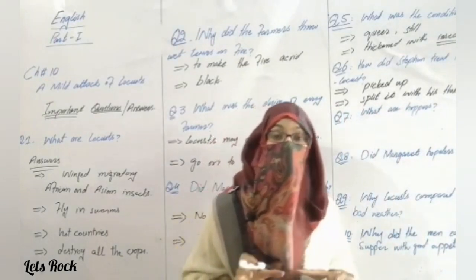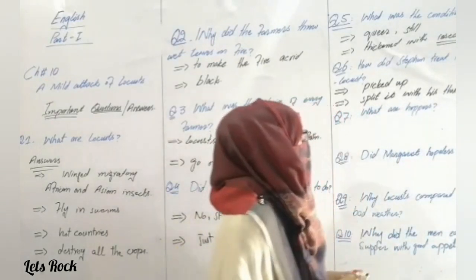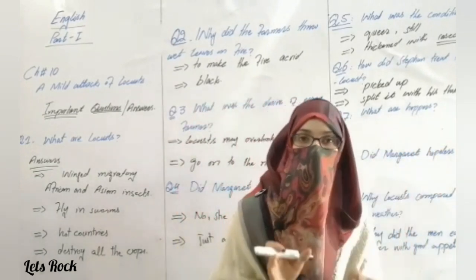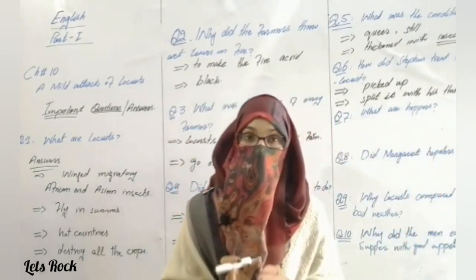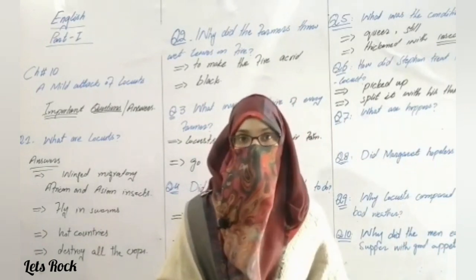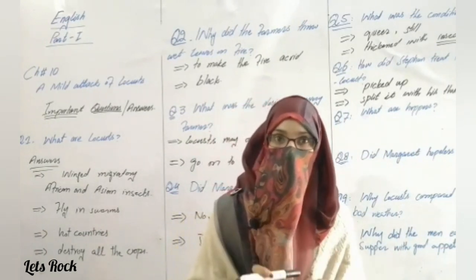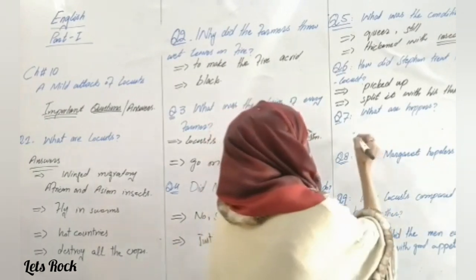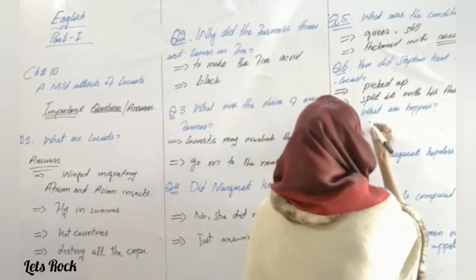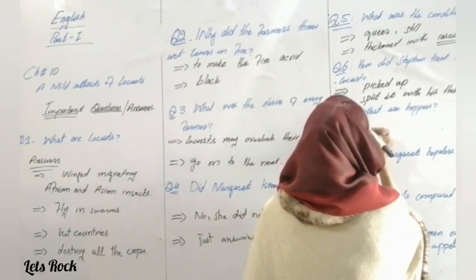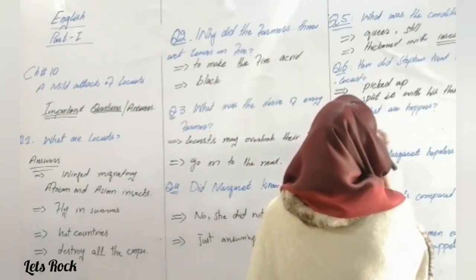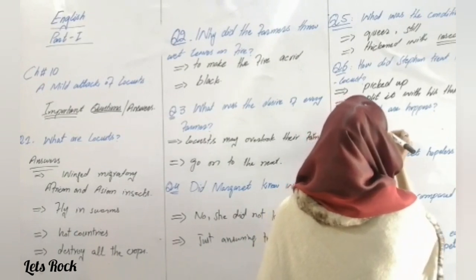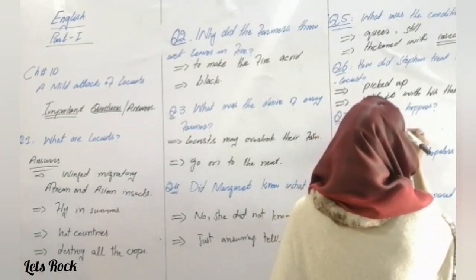Question number seven: What are hopers? Hopers are different from locusts. Locusts are grown-up insects, but hopers are not grown-up; they are young ones.